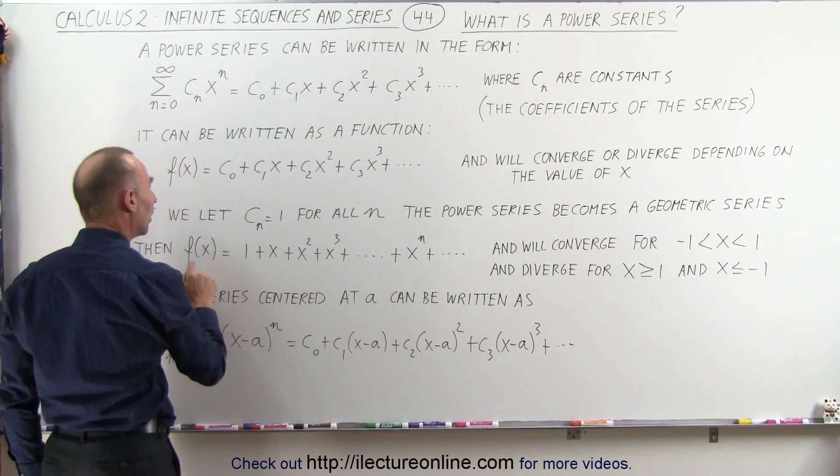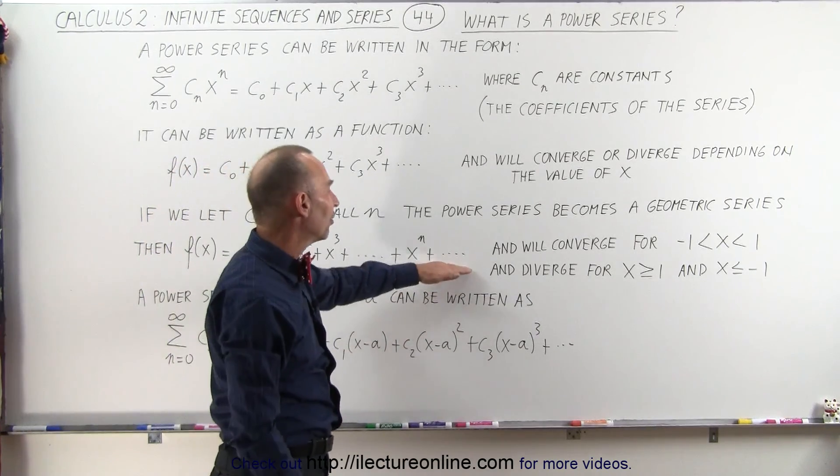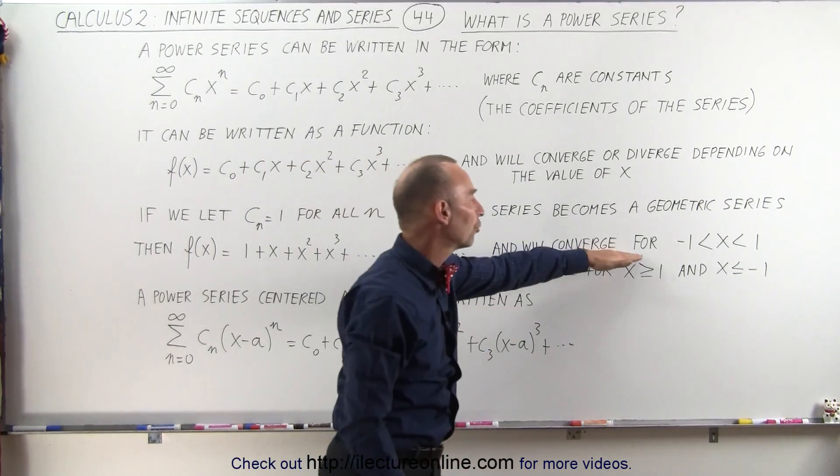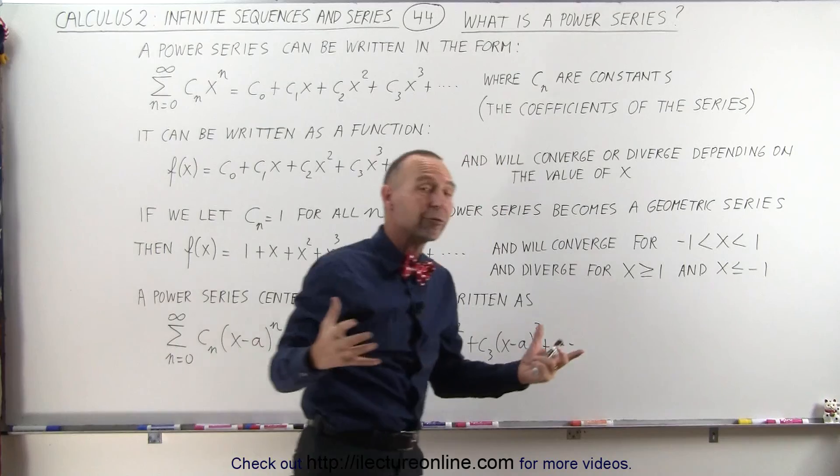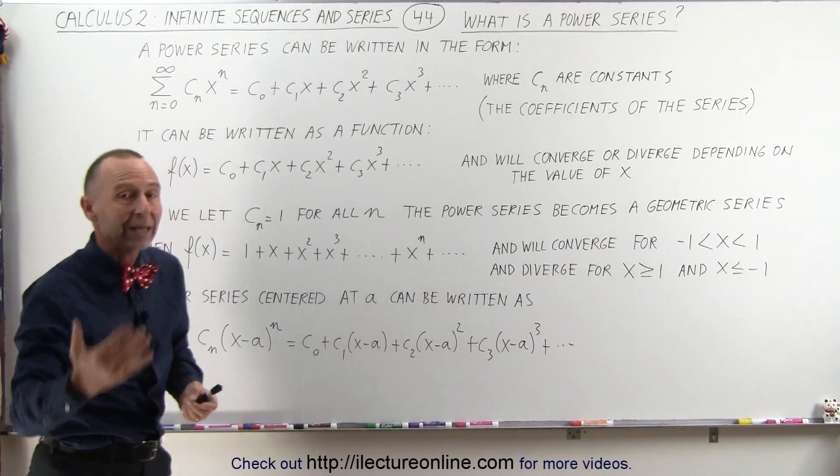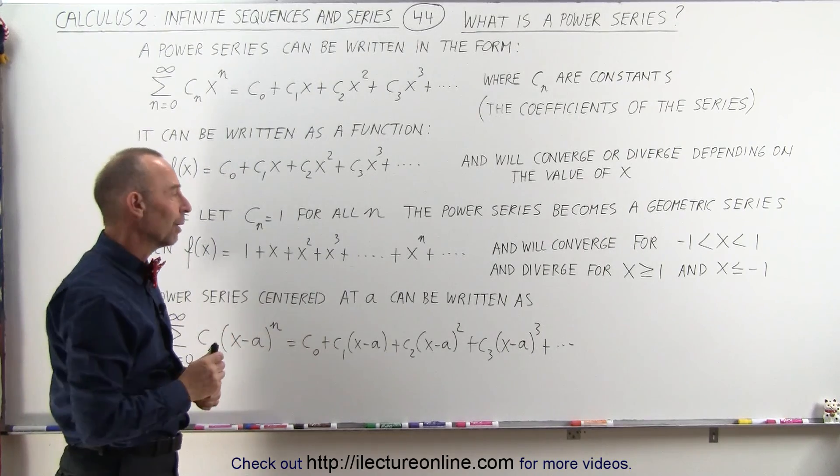And then we can say that this particular series will converge for values of x between negative 1 and 1 and will diverge for values of x that are greater than 1 or equal to 1 or smaller than negative 1 or equal to negative 1.